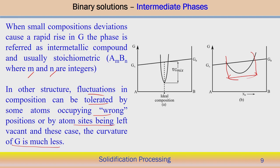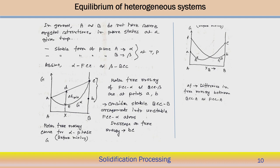Therefore, we can see that an intermetallic compound can form over a small deviation of composition with a very rapid change in the G curve. Now, if we look at the equilibrium of a heterogeneous system — so far we have discussed the G curve for a single pure component system and binary solution, assuming both are in the same phase or similar crystal structure. But in a heterogeneous system, suppose A and B do not have the same crystal structure — they are not having the same crystal structure in the pure state at a particular given temperature.